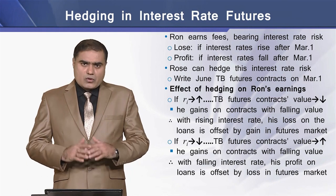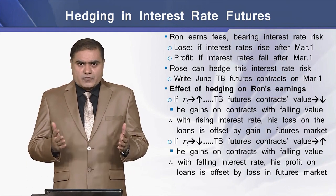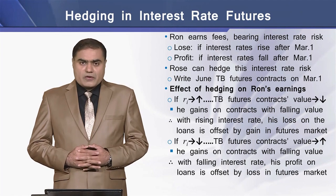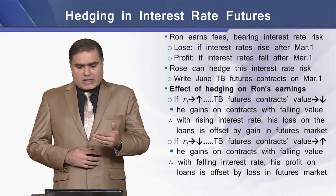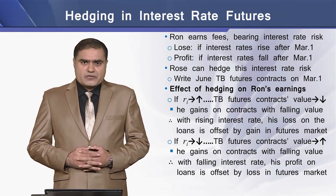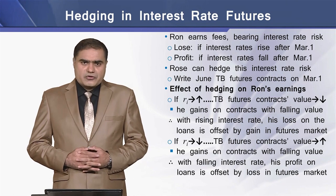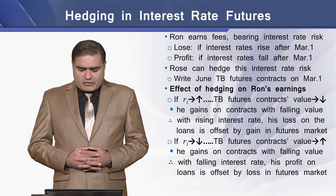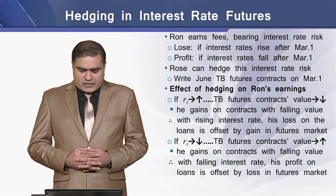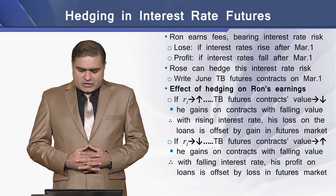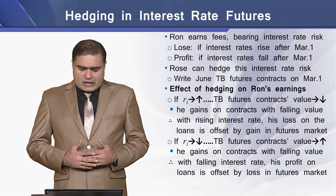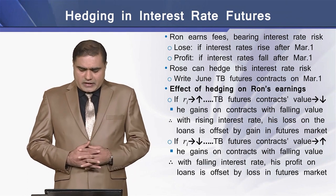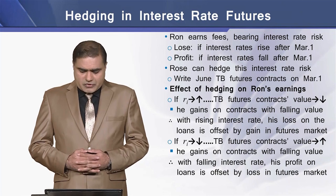If Ron writes this futures contract, what will be the effect of this hedging on his earnings? If the interest rate goes higher, Treasury Bond futures contract value will go down — meaning he will gain on the short contract as values fall. This means that with rising interest rates, his loss on the loan is offset by a gain in the futures markets.